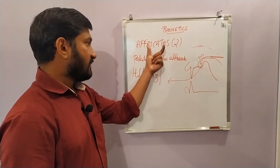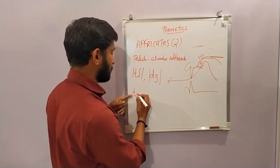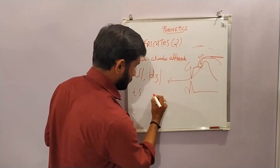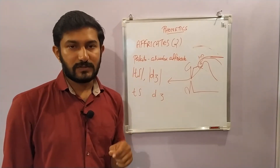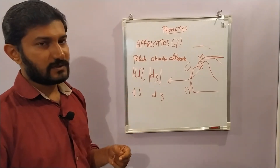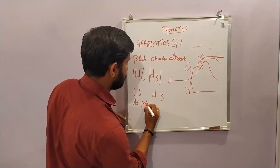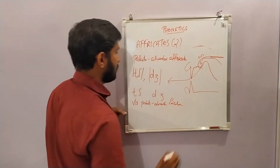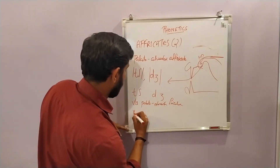The affricates are represented by digraphs — two symbols each. The first symbol is that of a plosive and the second is that of a fricative. For /tʃ/, the vocal cords are lying far apart and open, making it a voiceless palatalveolar affricate. For /dʒ/, the vocal cords are close together, producing voicing, making it a voiced palatalveolar affricate.